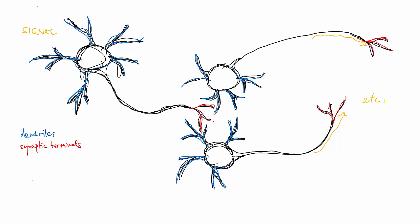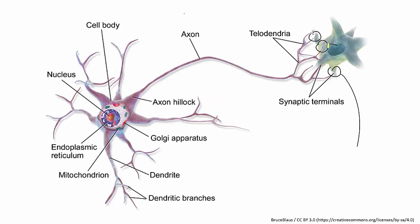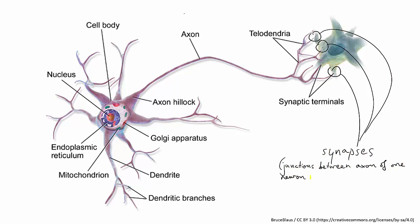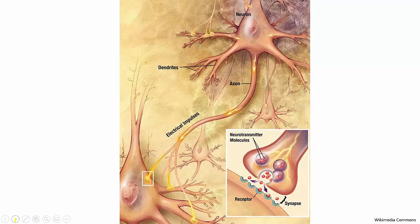In nervous tissue, neurons arrange themselves so that the synaptic terminals of one neuron come very close to — although they don't touch — the dendrites and cell body of a neighbouring neuron. This junction between one neuron and the next is known as a synapse, hence why the ends of the axon are called synaptic terminals.